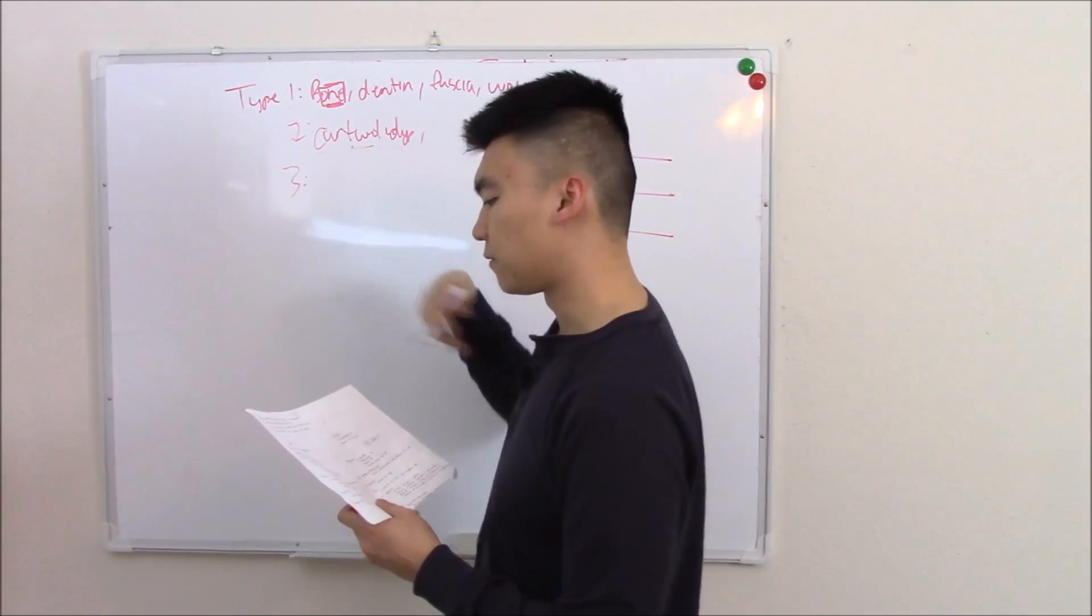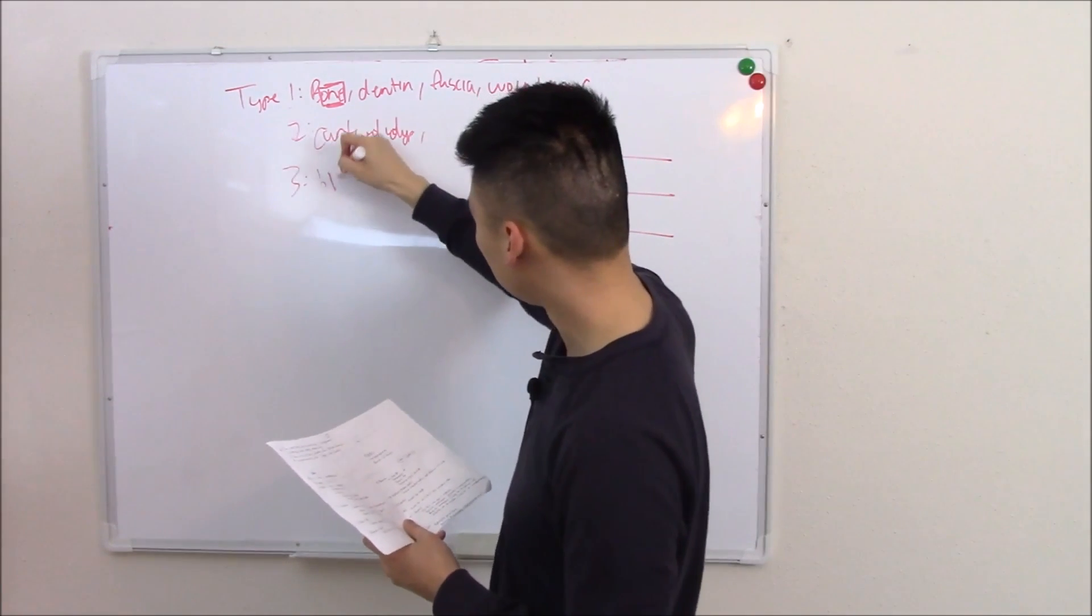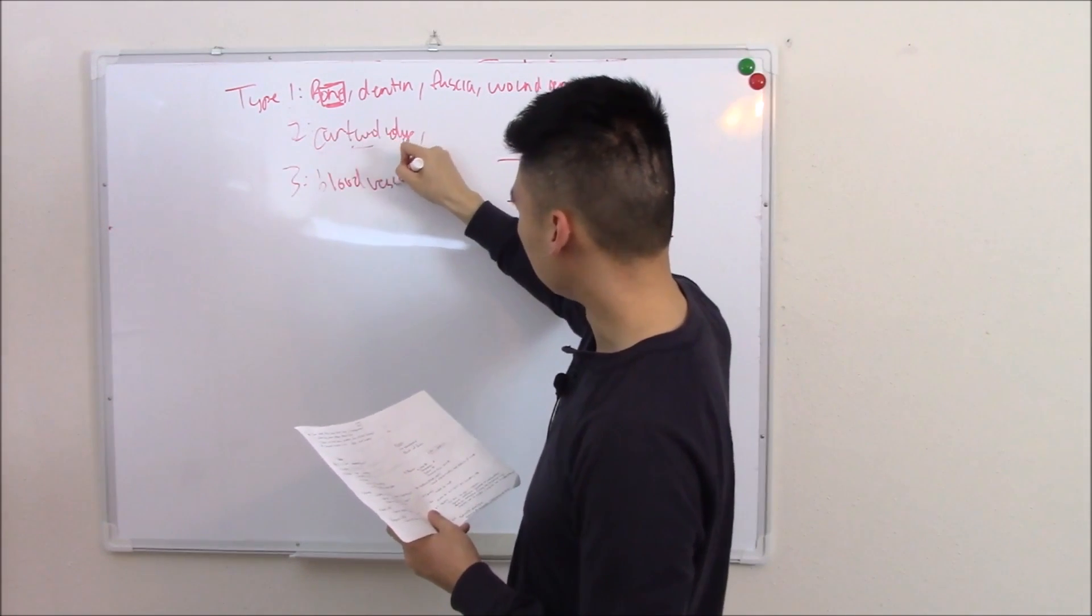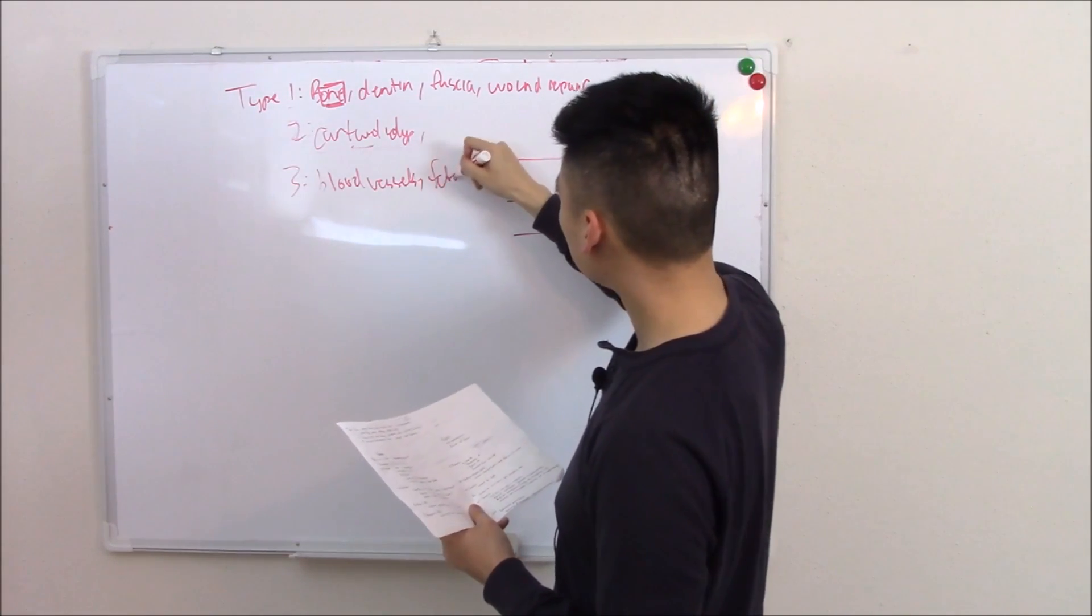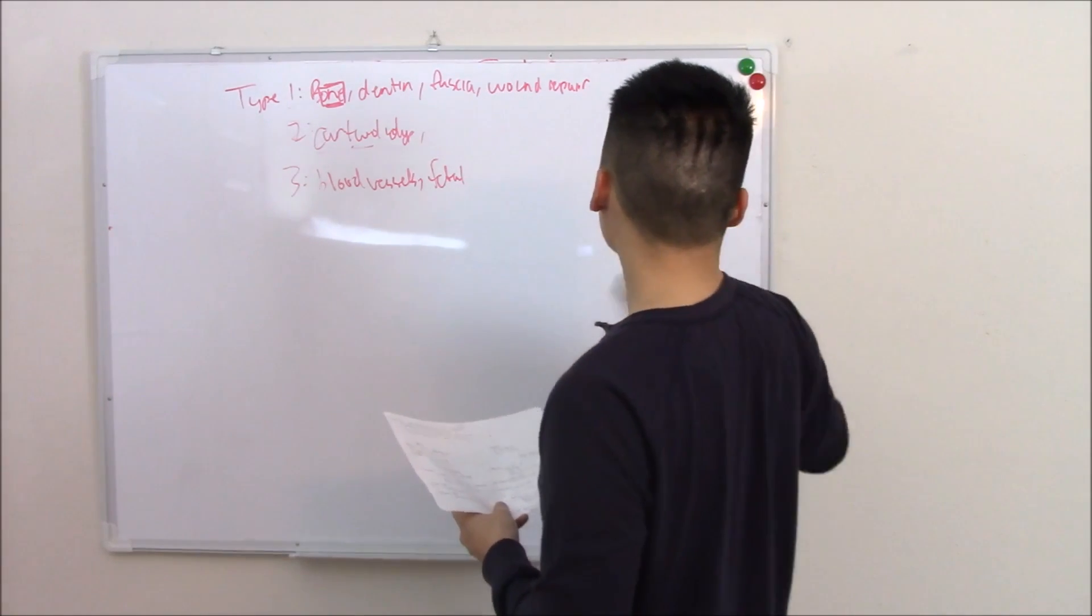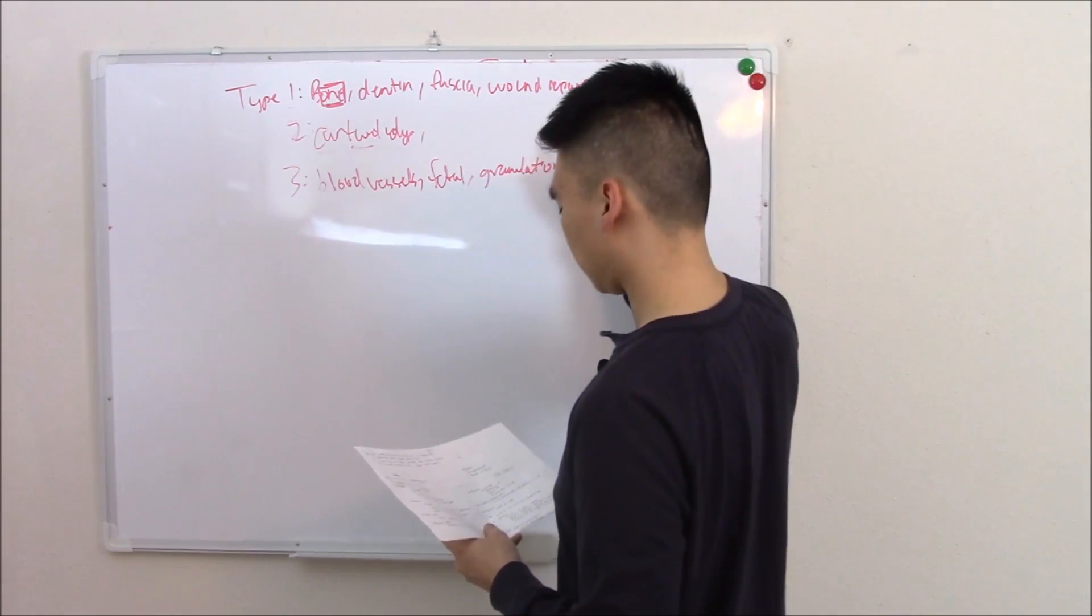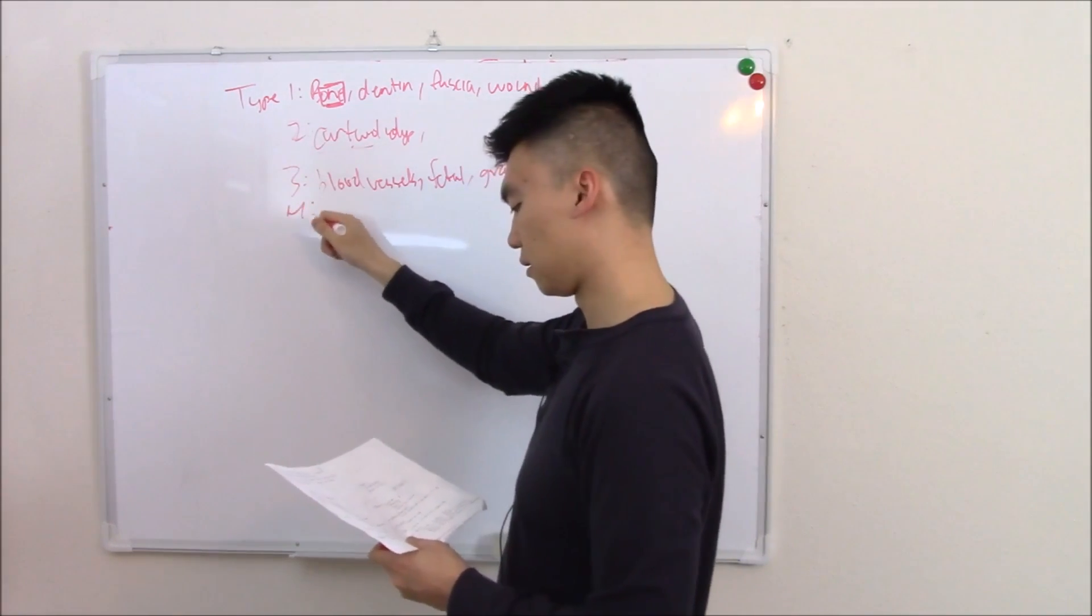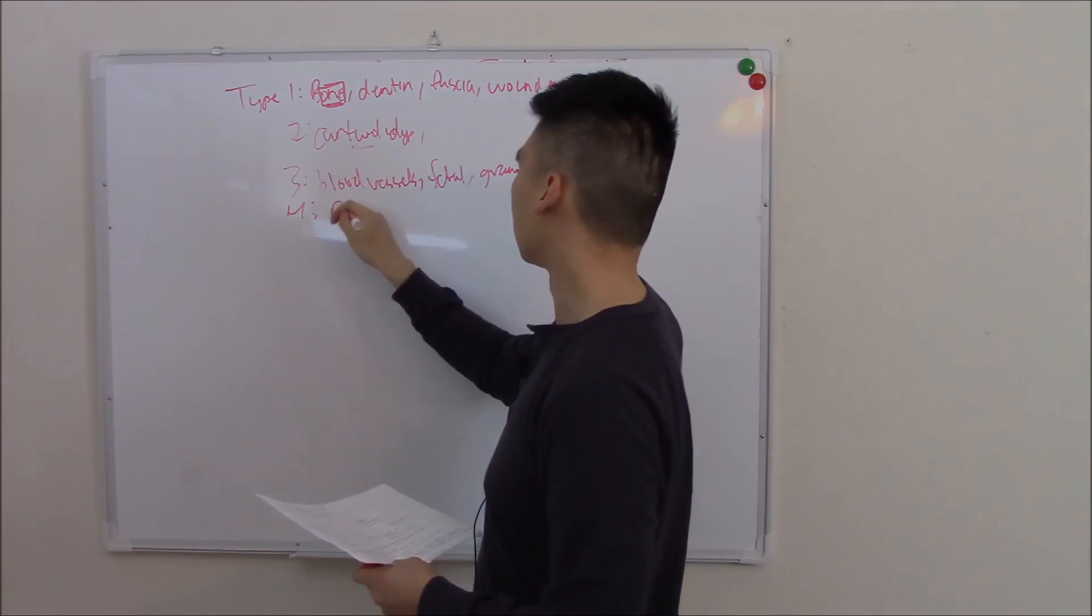Type 3 is found in your blood vessels, fetal tissue, and early granulation tissue. Finally, type 4 is found in your basement membrane primarily.